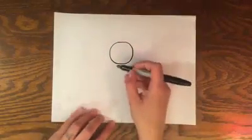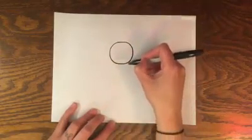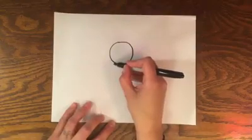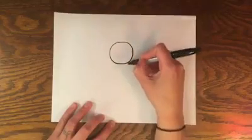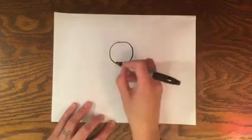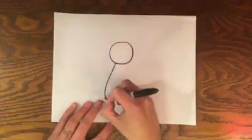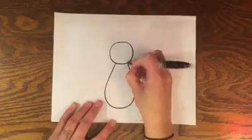And next we want to draw your penguin's body. So it'll look like this. We're going to start at the bottom of your circle head and we'll make a long U shape and we'll make sure the top of the U comes right back up to your circle. And if you'll notice my U shape gets bigger at the bottom and then smaller at the top.